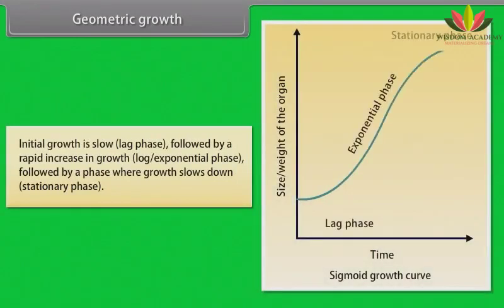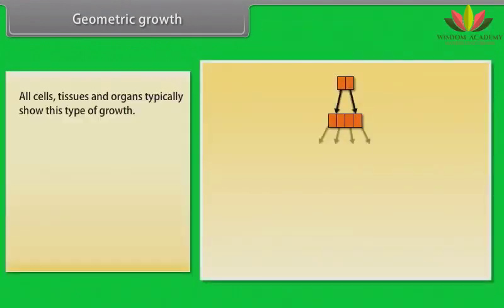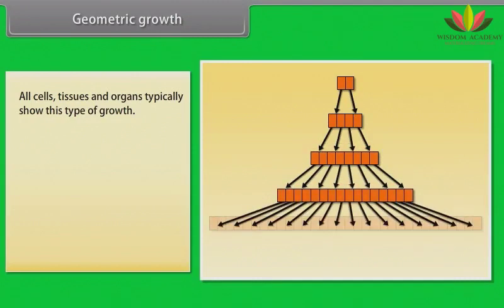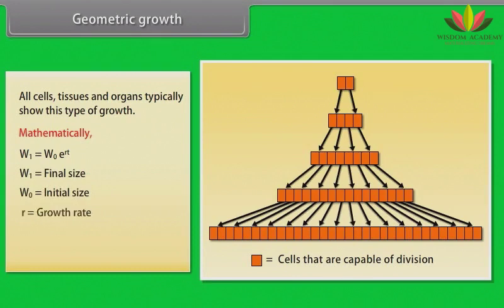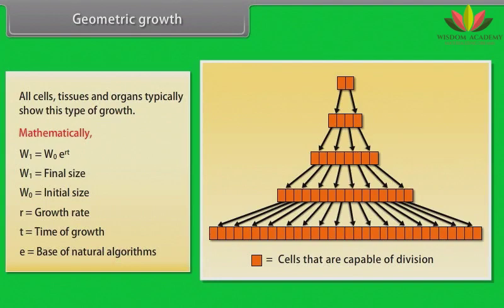In geometric growth, initial growth is slow, followed by a rapid increase in growth, followed by a phase where growth slows down. All cells, tissues and organs typically show this type of growth. Mathematically, W1 = W0 × e^(Rt), where W1 is final size, W0 is initial size, R is growth rate, t is time of growth, and e is the base of natural logarithms.